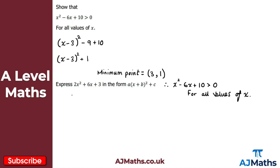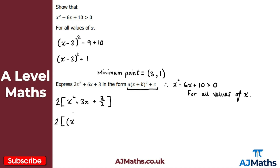For the second practice question, we need to express 2x² + 6x + 3 in the form a(x+b)² + c. Again it's slightly more difficult because the coefficient of x squared is not 1, so we factor out the 2. We get 2 lots of (x² + 3x + 3/2). Now the coefficient of x² is 1, so we complete the square: (x + 3/2)² and then subtract (3/2)² which is 9/4, so minus 9/4, plus 3/2.